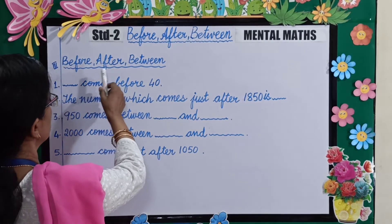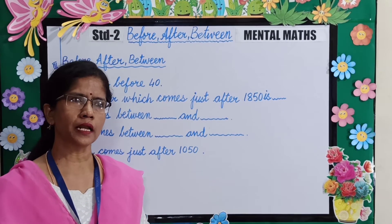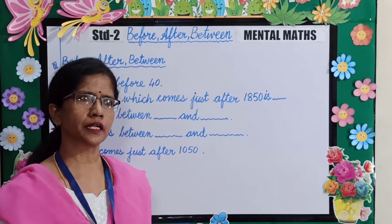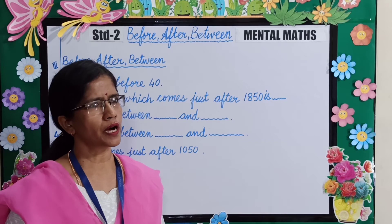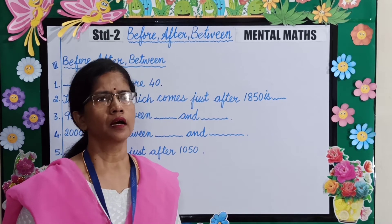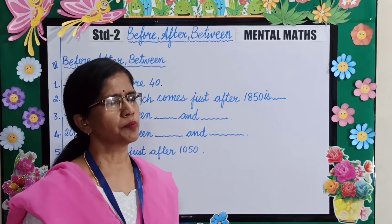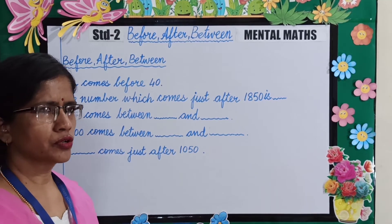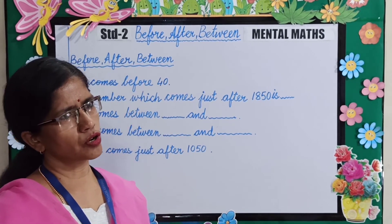Next topic is before, after and between numbers. Before number means 1 less than the given number, that is you subtract 1 from the given number. After number means 1 more than the given number, that is you add 1 to the given number. Between number is the number that lies in the middle of 2 numbers. Before number can also be called predecessor, and after number is also called successor.